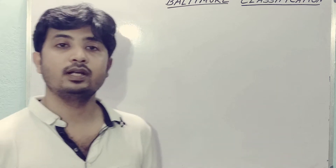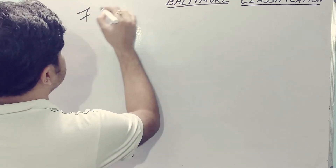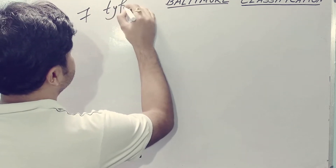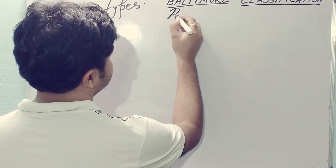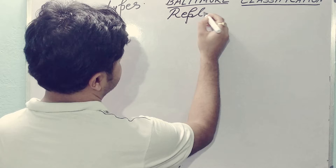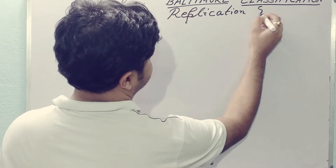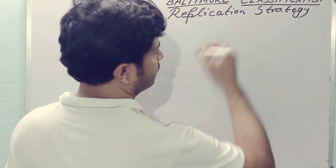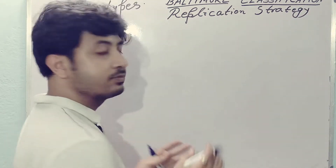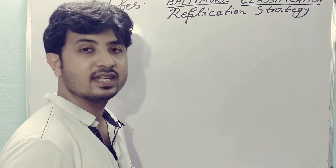Baltimore classification explains seven types of replication strategies. These seven types of replication strategy depend on the nucleic acid, that is DNA or RNA.